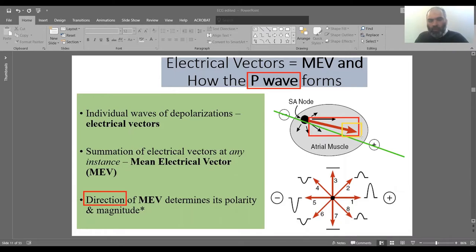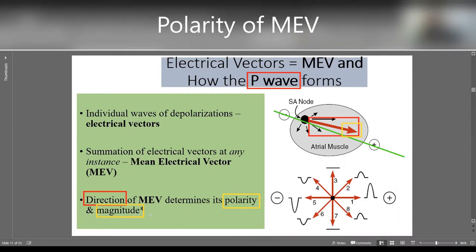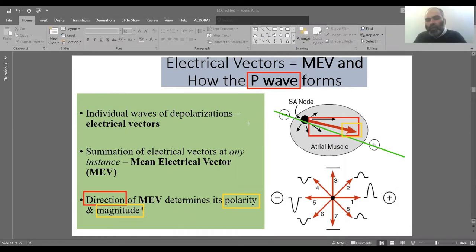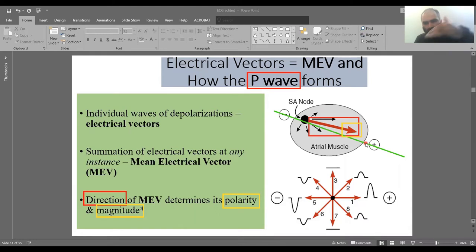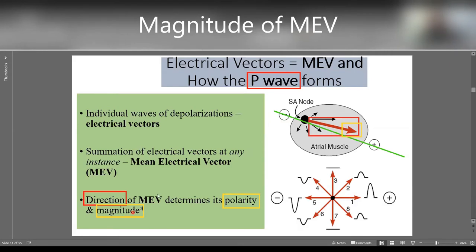The direction of the mean electrical vector (MEV) determines its polarity — that's a very important point — as well as its magnitude, when compared along the line of the ECG lead. Where does the MEV lie? If it lies exactly on the line directed towards the positive terminal, its polarity will obviously be positive. If it's directed away from the positive terminal, it will be negative.